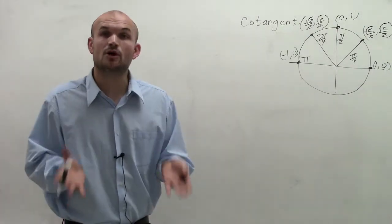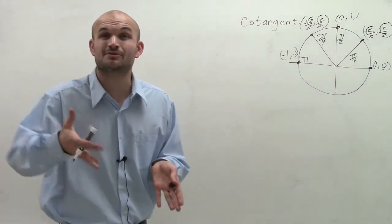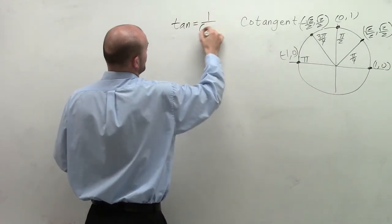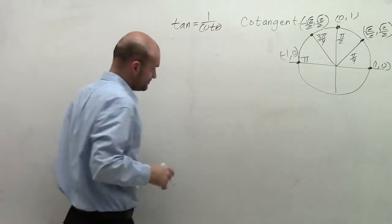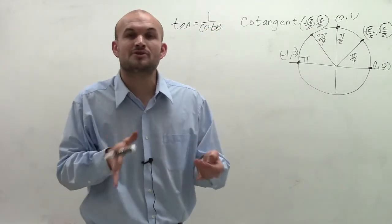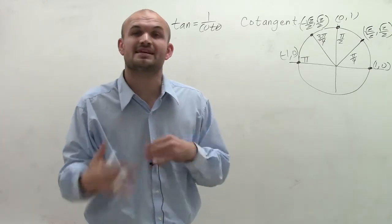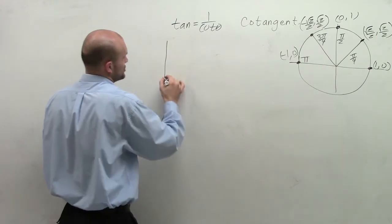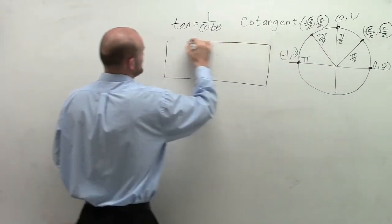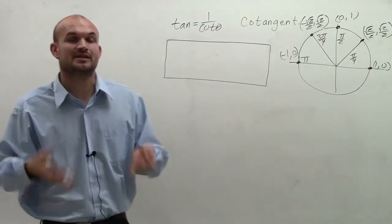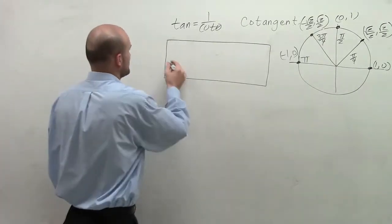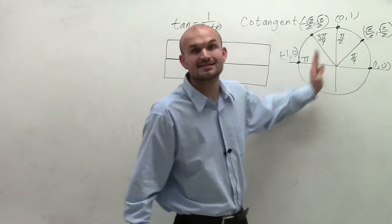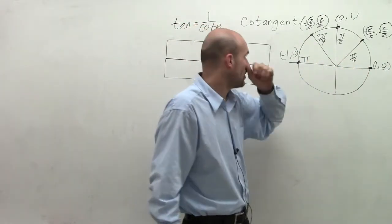The cotangent function is the reciprocal of tangent, meaning tangent equals 1 over cotangent. What I'm going to do is first evaluate the tangent values and then see how that affects the cotangent graph. Like any function, you have input values that you plug in to get output values. The input values I'll choose are the angles in the first and second quadrant.